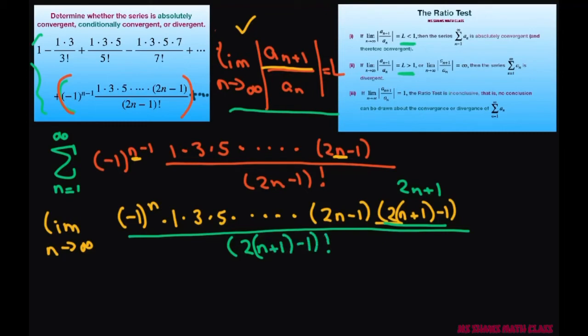Which just gives us 2n plus 1 factorial.